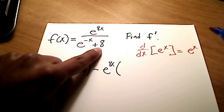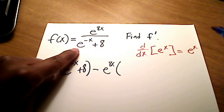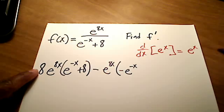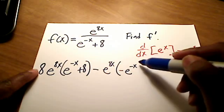Times g prime here. Well, the derivative of 8 is just 0, so you can ignore that. And the derivative of e to the negative x, I hope you see, is negative e to the negative x. I just invoked the chain rule there.